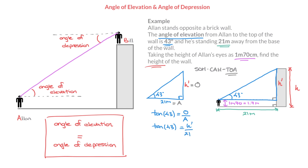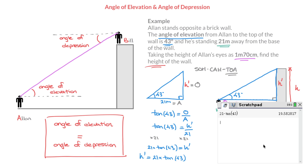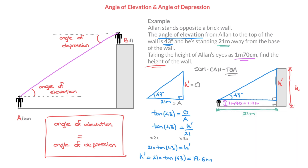To find h prime, all I have to do is multiply both sides of this equation by 21. So it turns into 21 × tan(43) = h prime. In other words, h prime = 21 × tan(43). All we need to do is plug 21 × tan(43) into our calculators. Rounding to one decimal place, that's equal to 19.6 meters. I'll write h prime = 19.6 meters right here and box that first result.